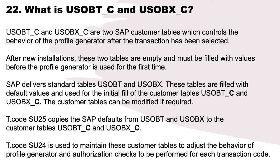What are USOBT_C and USOBX_C? USOBT_C and USOBX_C are two SAP customer tables which control the behavior of the profile generator after a transaction has been selected. After new installations, these two tables are empty and must be filled with values before the profile generator is used for the first time. SAP delivers standard tables USOBT and USOBX, which are filled with default values and used for the initial fill of the customer tables USOBT_C and USOBX_C. Transaction SU25 copies the SAP defaults from USOBT and USOBX to the customer tables.